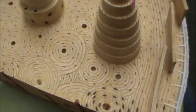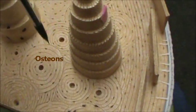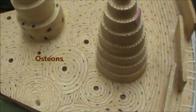These individual ring structures are called osteons. You can see several, they're all over.